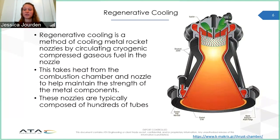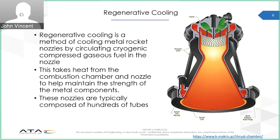Regenerative cooling is when a rocket engine circulates cryogenic gases through the nozzle to prevent the hot exhaust from melting the metal. One way to do this is to build a nozzle out of hundreds of tubes and to circulate the cryogenic fuel through these tubes. These are typically brazed together, which is a method of welding. Today, we will be discussing a nozzle composed of 200 tubes that are brazed together.